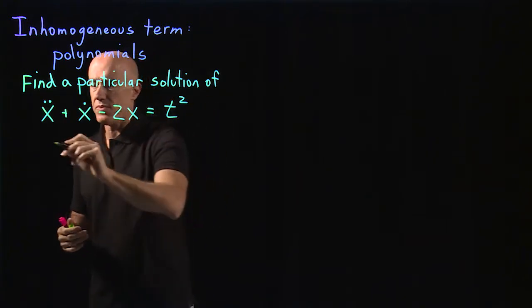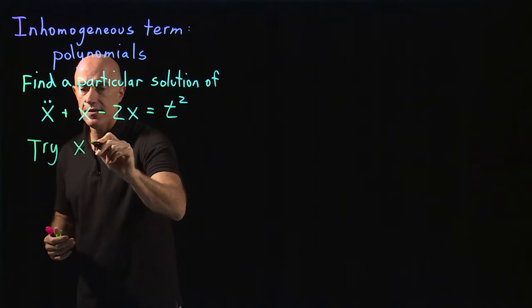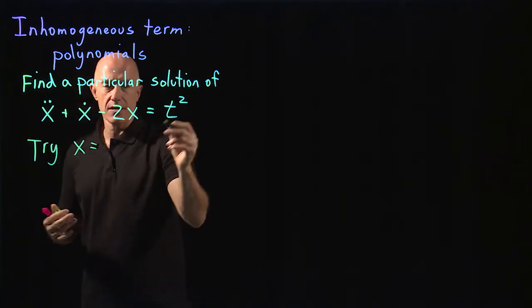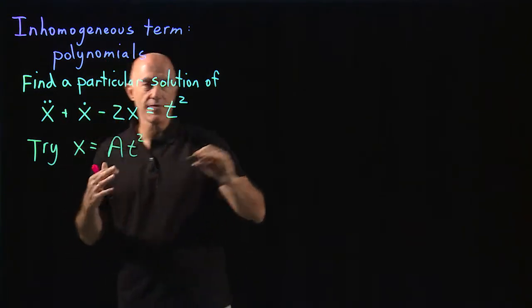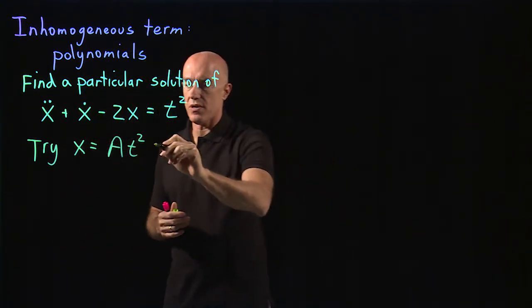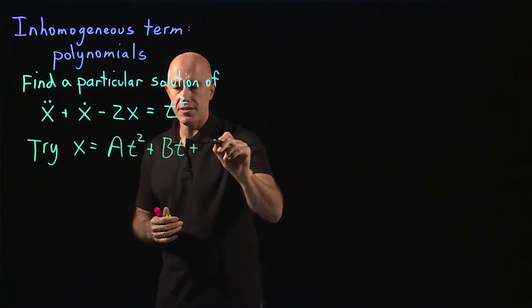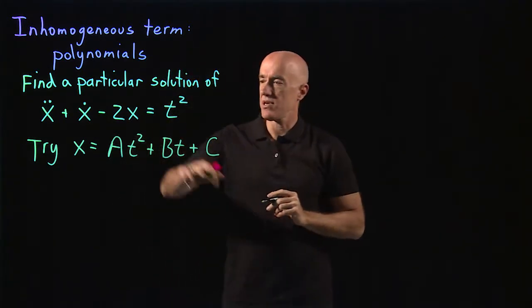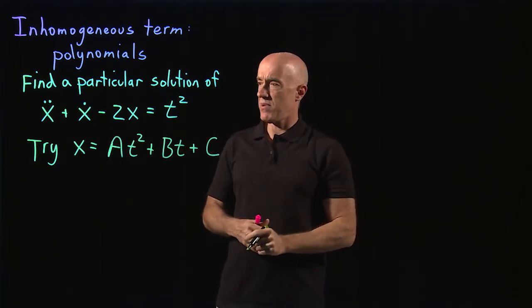So here, when the polynomial, the standard ansatz is to try x equals some constant times t squared. But you have to carry all of the lower orders, so plus b times t plus c. Because the derivatives reduce the order of the polynomial.